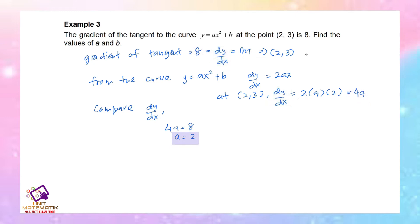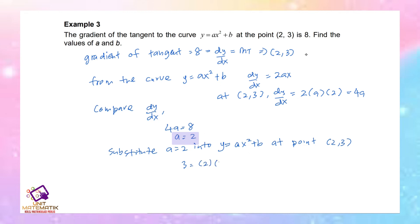Now we find the value of b by substituting a = 2 into the curve at point (2, 3): 3 = 2(2²) + b. Simplifying: 3 = 8 + b, so b = 3 - 8, therefore b = -5.